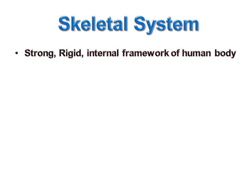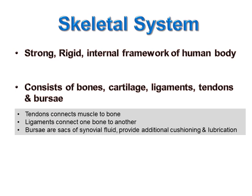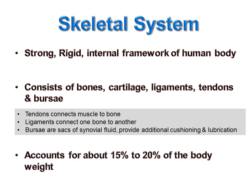The skeletal system forms a strong, rigid internal framework of the human body. When I say strong, it refers to strength, and rigid refers to stiffness. The human skeletal system consists of bones, cartilage, ligaments, tendons, and the skeleton per se. The skeletal system accounts for about 15% to 20% of the body weight.